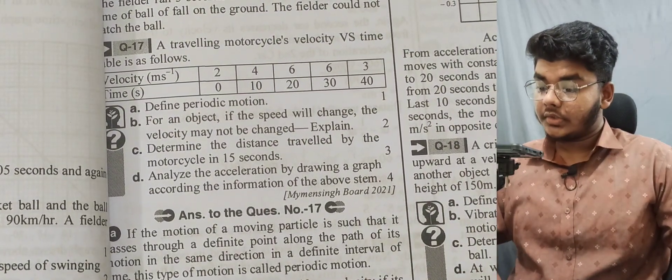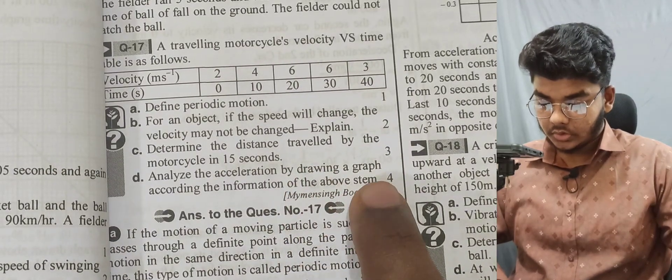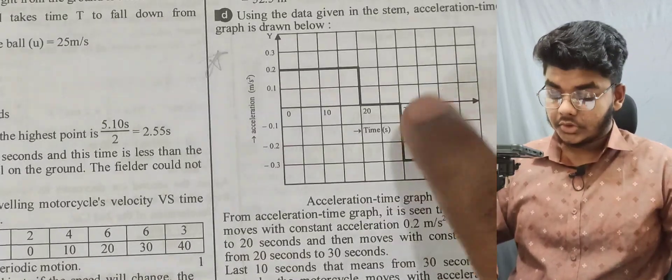Question 17: determine the distance traveled at 1 second and 15 seconds. Analyze the acceleration by drawing an acceleration graph.